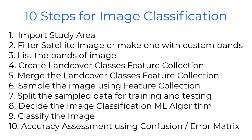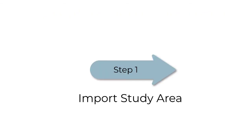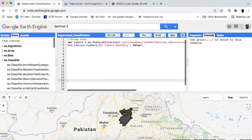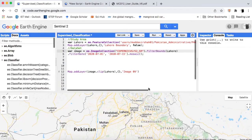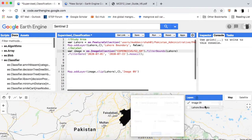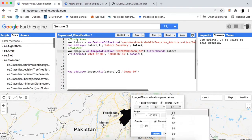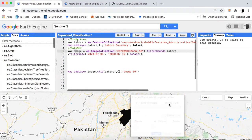The following are the 10 steps that will help us classify the image. Step 1: we will import our study area geometry — you can make a polygon too. Step 2: we will import the dataset. For this tutorial we will be using Sentinel-2 imagery. From the Sentinel-2 image collection we will filter our multi-band image for our study area.